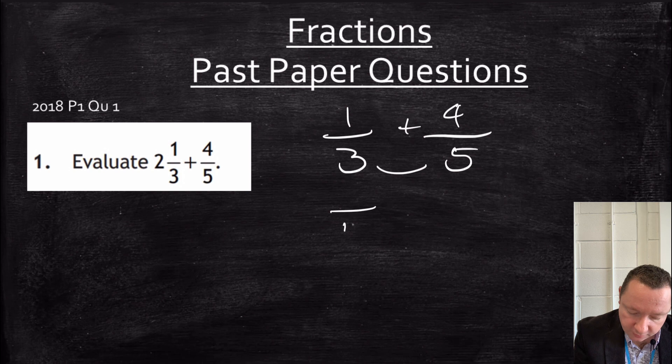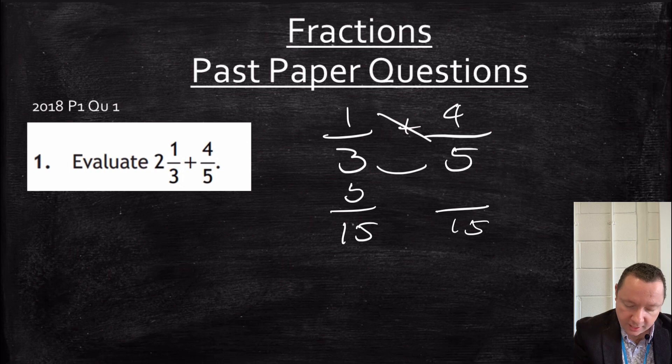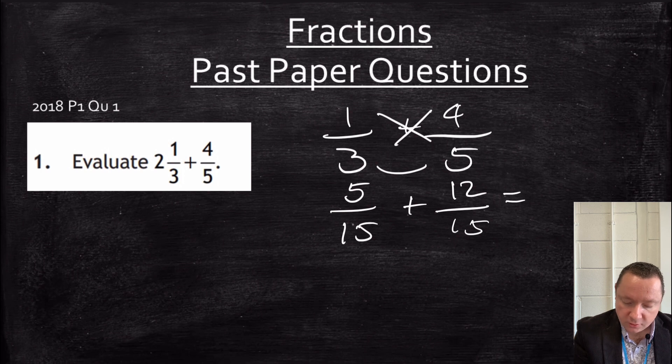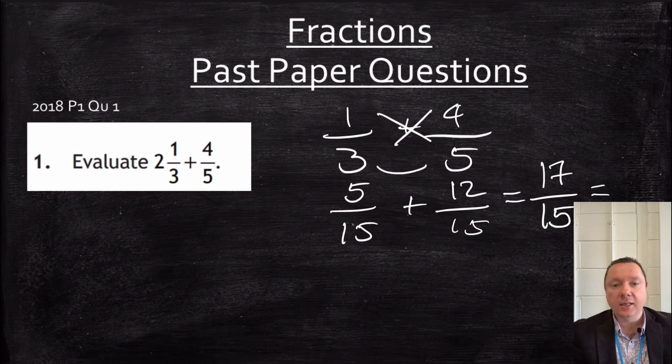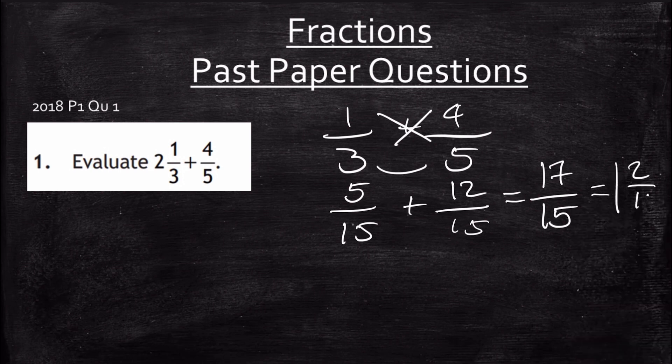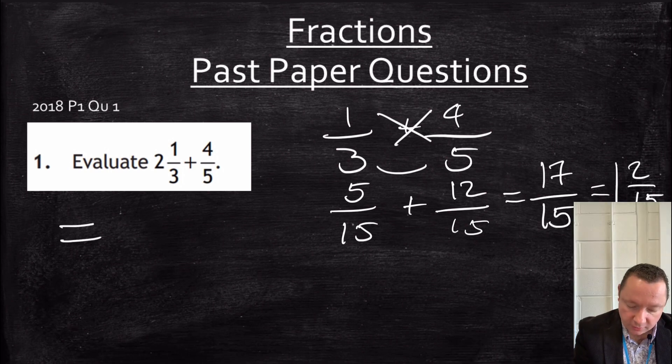3 times 5 is 15. That's my common denominator. 1 times 5 is 5 for the first fraction. 4 times 3 is 12. Putting it together, I get 12 plus 5 is 17 over 15. Changing it back to a mixed number, I get 1 and 2 fifteenths.